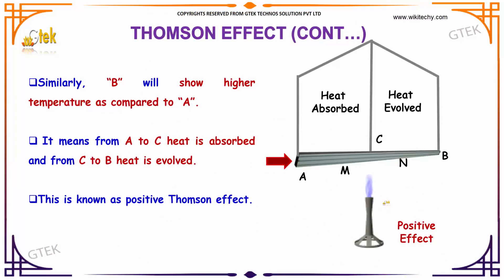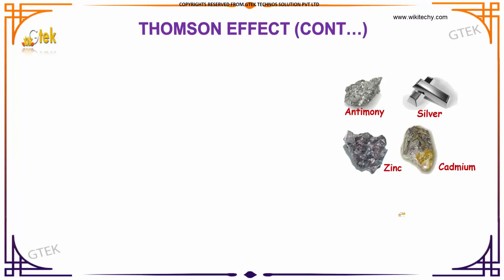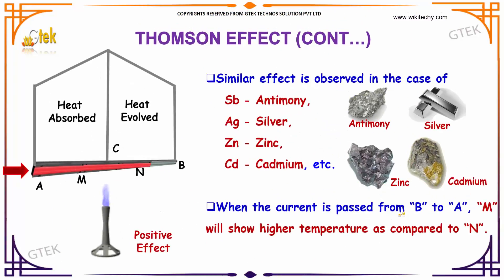Similarly, B will show a higher temperature when compared to A. This means from A to C heat is absorbed, and from C to B heat is absorbed. This is referred to as the positive Thomson effect. A similar effect can be observed with antimony, silver, zinc, and cadmium.